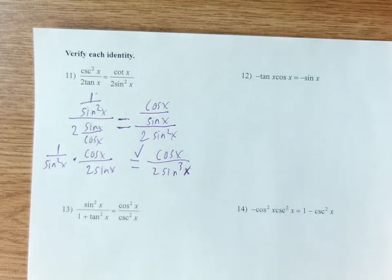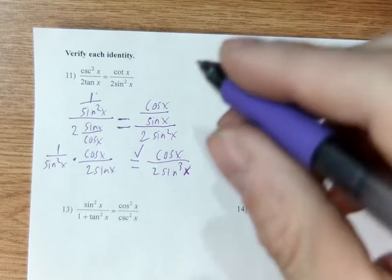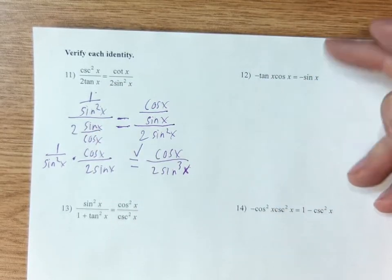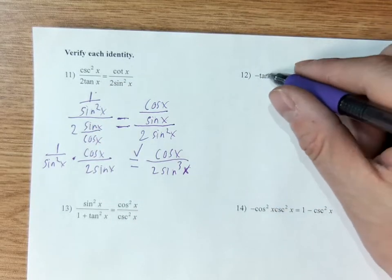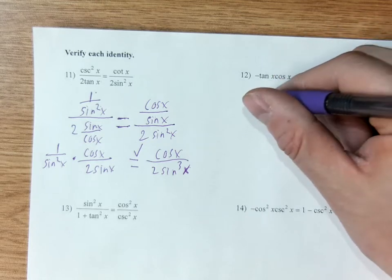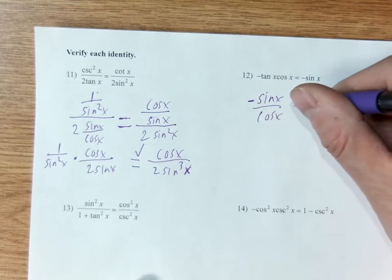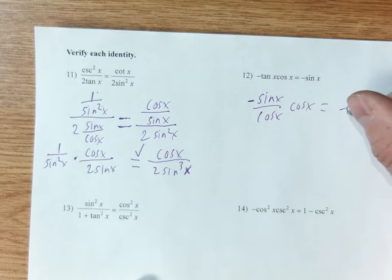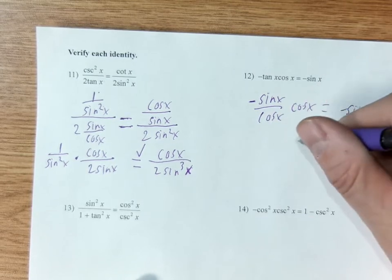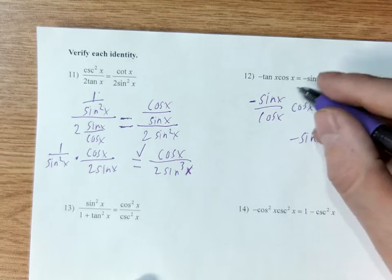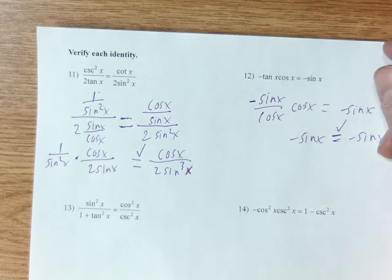There's nothing really to circle here since I want you to verify each identity by going through the steps. Next one: tangent is sine over cosine, so I'll replace tangent with sine x over cosine x. What I notice is that the cosine x's will reduce — they cancel, one in the numerator and one in the denominator — and I have it proved.